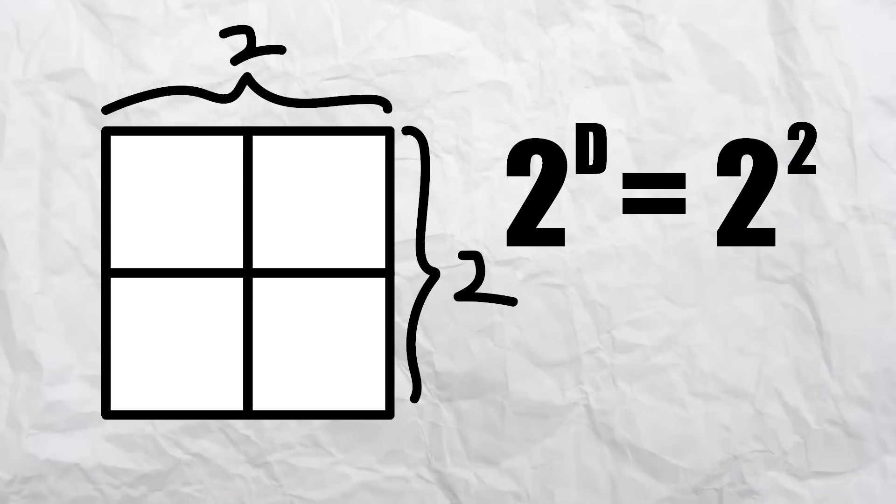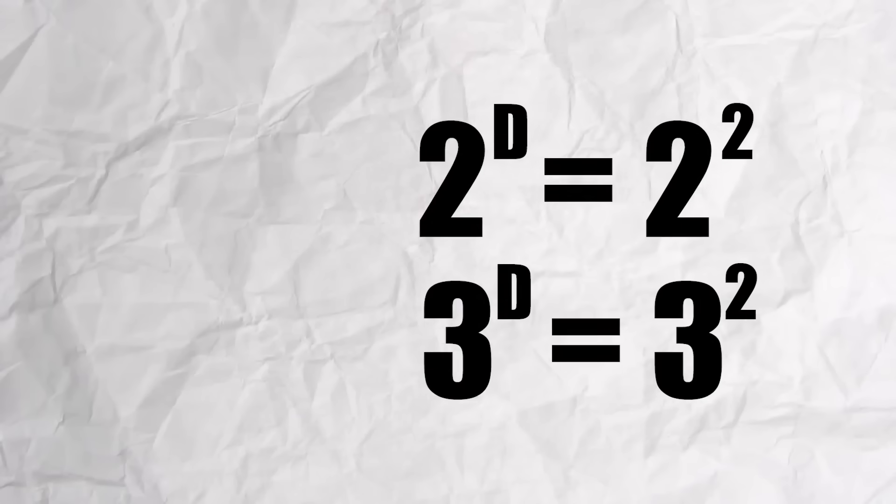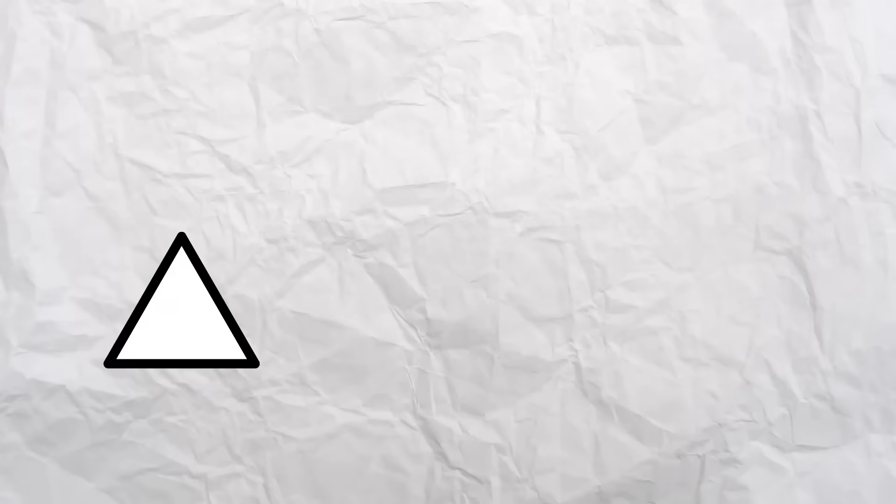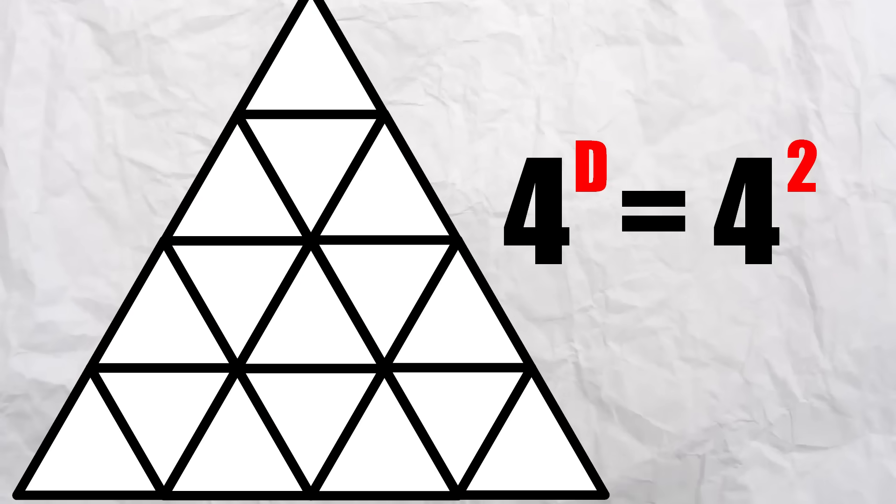To scale a square by a factor of two, it takes four copies, or two to the power of two. To scale it by a factor of three, we require nine copies, or three to the power of two. Setting out the equation seen here, we get the dimension of a square is two. We can also do the same with a triangle. Two times the size requires four copies, and four times the size requires sixteen.